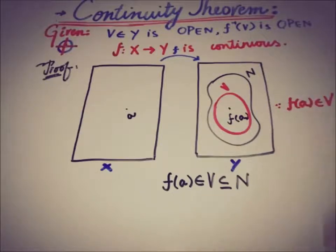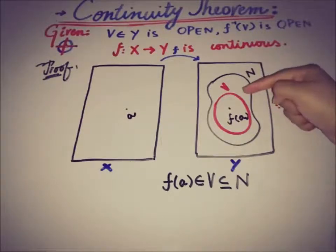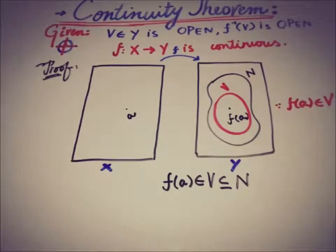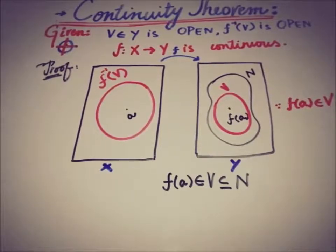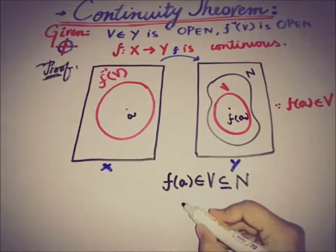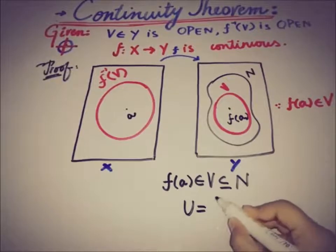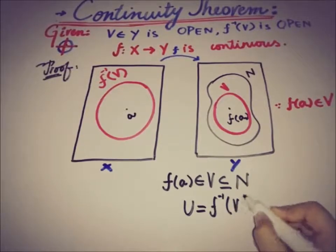By using the given fact that inverse image of V is also open and contains the point a in X, we can represent it as: let's call the inverse image U, that U is equal to f inverse of V. This is our supposition here.